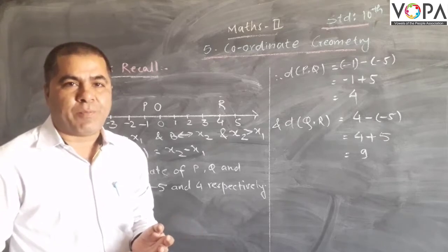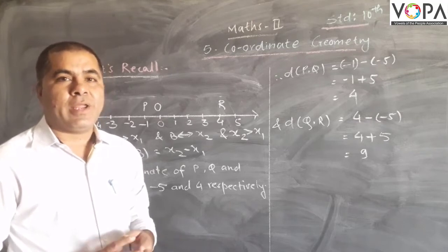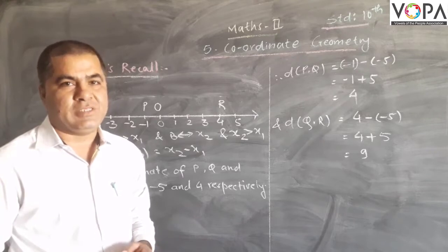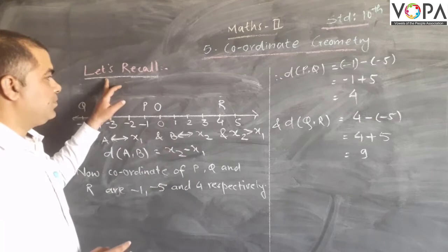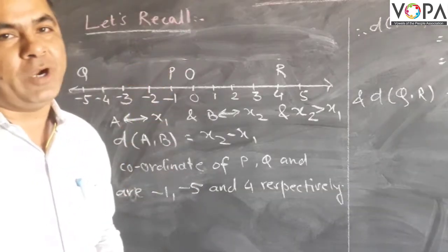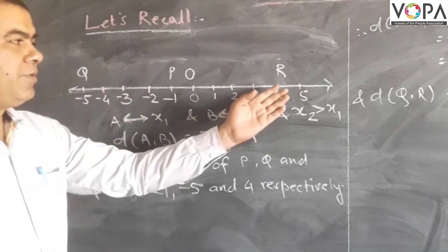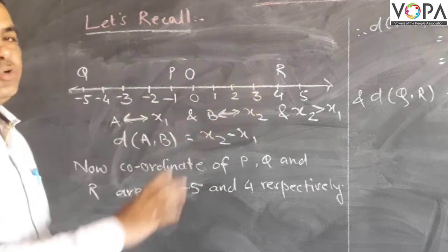The coordinates of a point, and so on. Now in this chapter, we are going to study some new things. Let's recall from Standard 9 to find the distance between two points on a number line. Here a number line is given. Points P, Q, and R are shown.